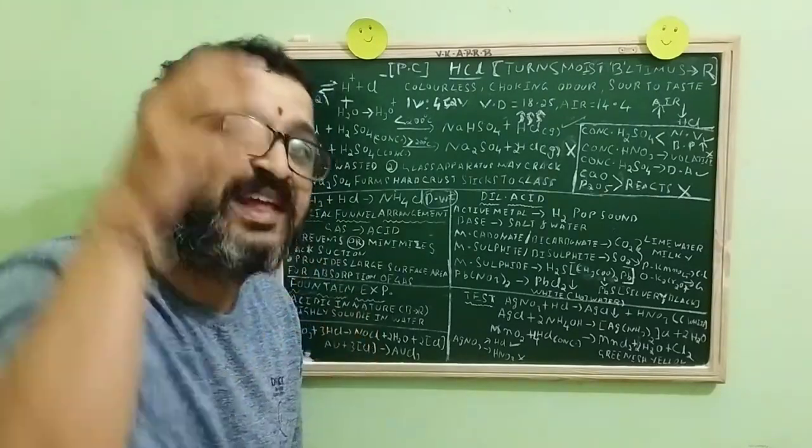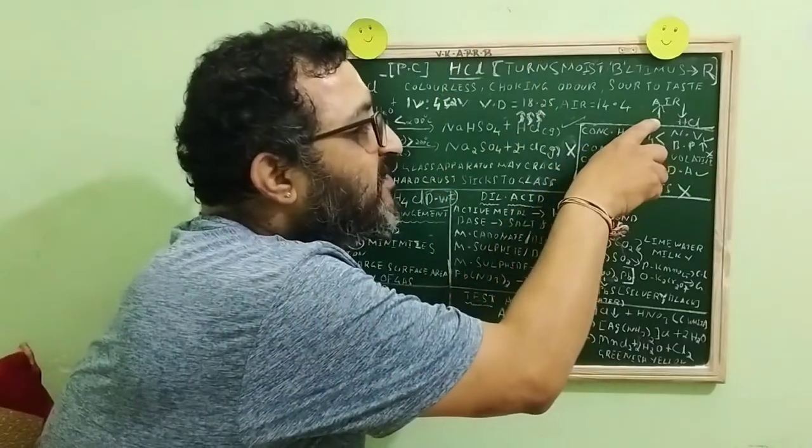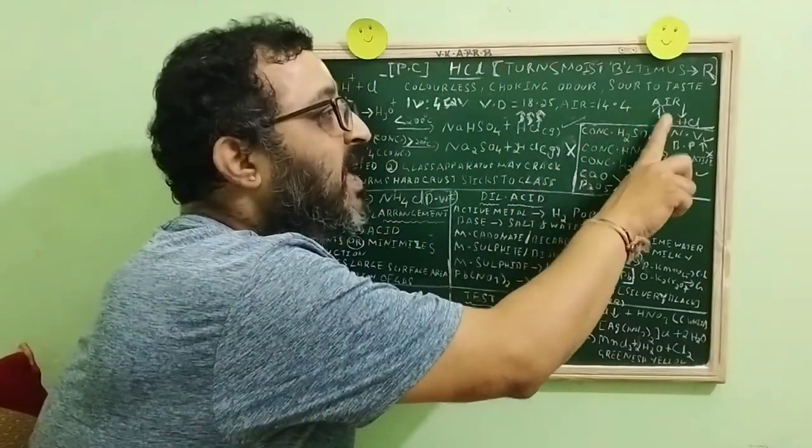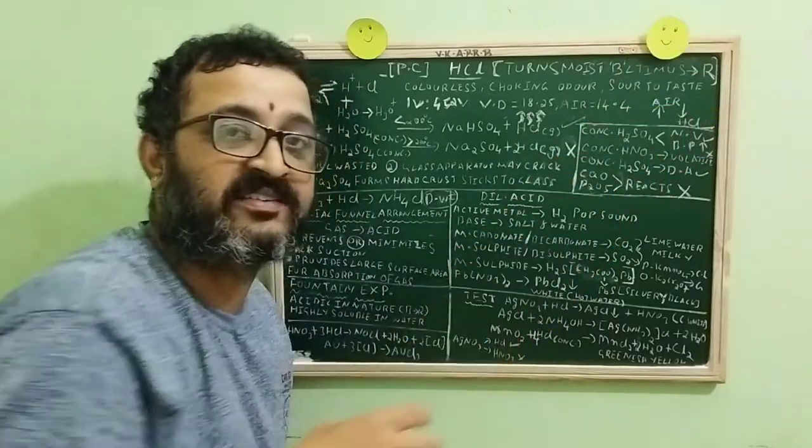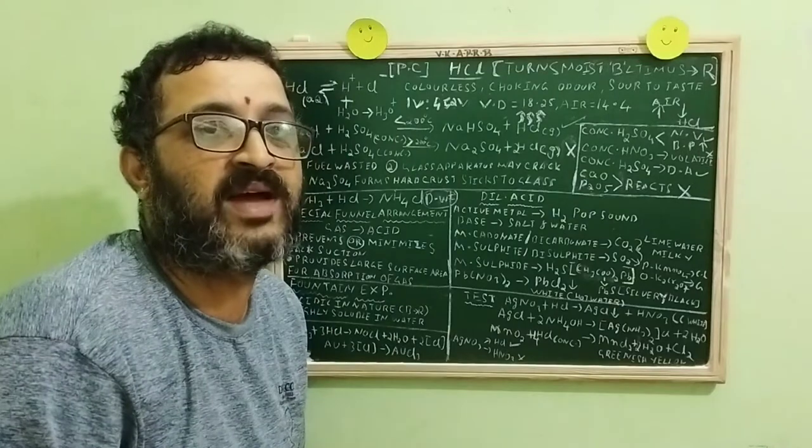Then when HCl enters, the air comes out. Then how is HCl collected? I hope you can see this arrow mark. Air comes out when HCl enters. So HCl is collected by upward displacement of air.